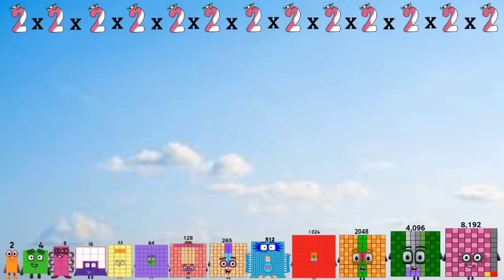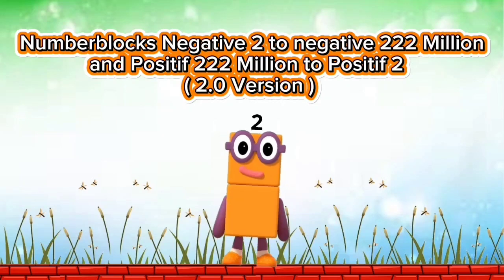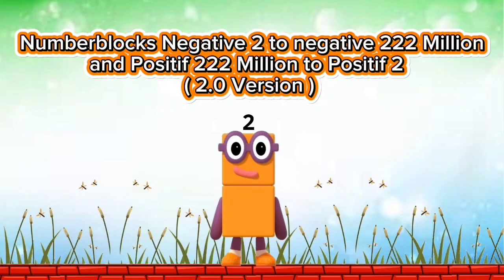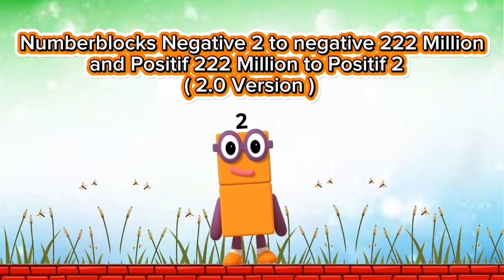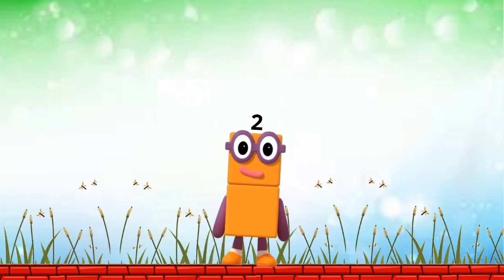Number blocks: negative 2 to negative 222 million, and positive 222 million to positive 2. Version 2.0.